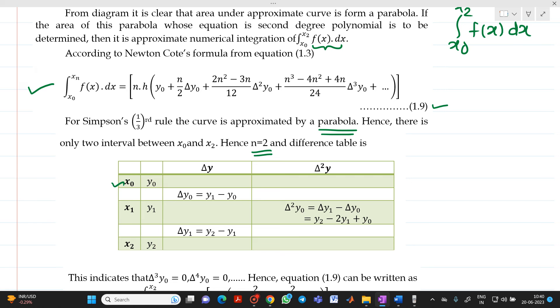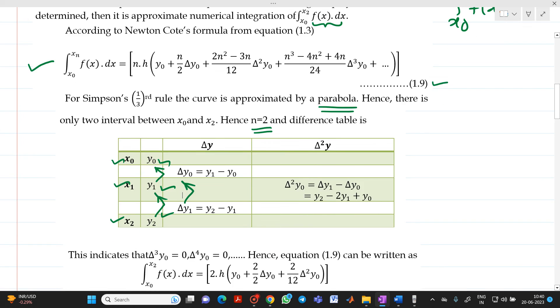So, as n equal to 2, we will have data points x0, x1, x2 and y0, y1, y2. Now, how to find delta y0? It will be y1 minus y0. How to find delta y1? It will be y2 minus y1. Already, we have gone through this in interpolation. And how to find delta² y0? It will be delta y1 minus delta y0. Now, from the table, it is observed that delta³ y0, delta⁴ y0 and whatever upper terms, it will be 0.